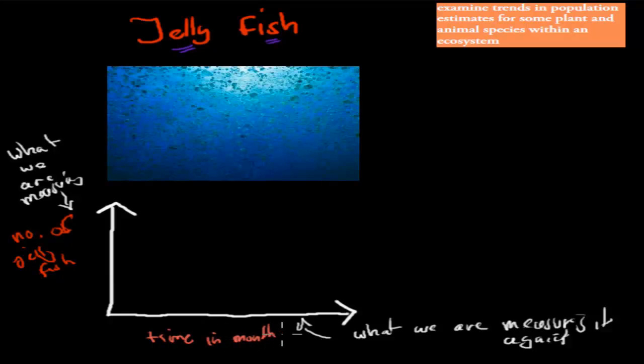It's also important to actually give the unit. Unit is months, and in the other case, the unit is number. And then you should also give it a title. So for example, number of jellyfish, or trends in population. Trends in jellyfish population. So these are the basic steps when it comes to graphing. You should know where to put your things that you're measuring. So that comes on your vertical axis. And you should also know where to put what we're measuring against.